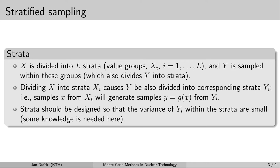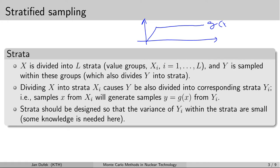When we divide the input random variable into groups, it also divides the output random variable y into corresponding groups y_i, which we can also number according to the group indices. To use the stratified sampling method we actually need to have some information about the system — we need that information in order to design the division of the groups. In our example we had the numerical model given by the function g(x), and we designed two groups x1 and x2.